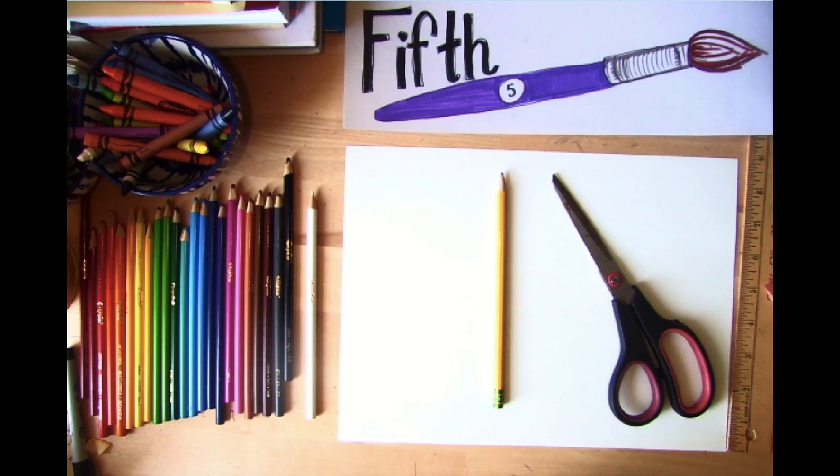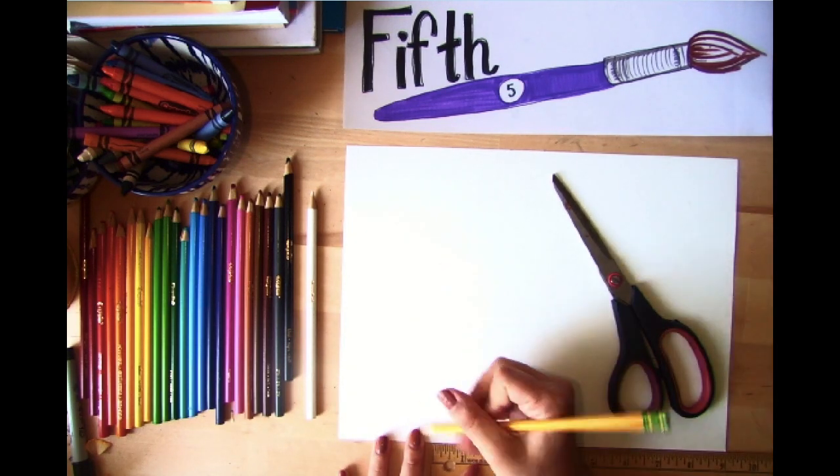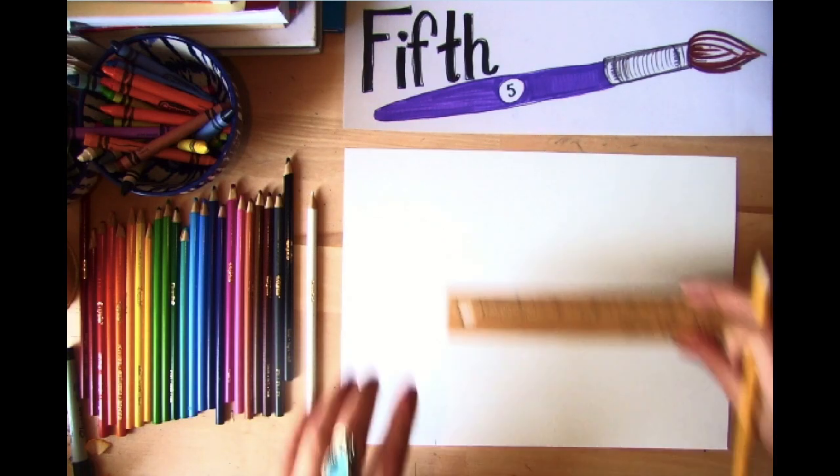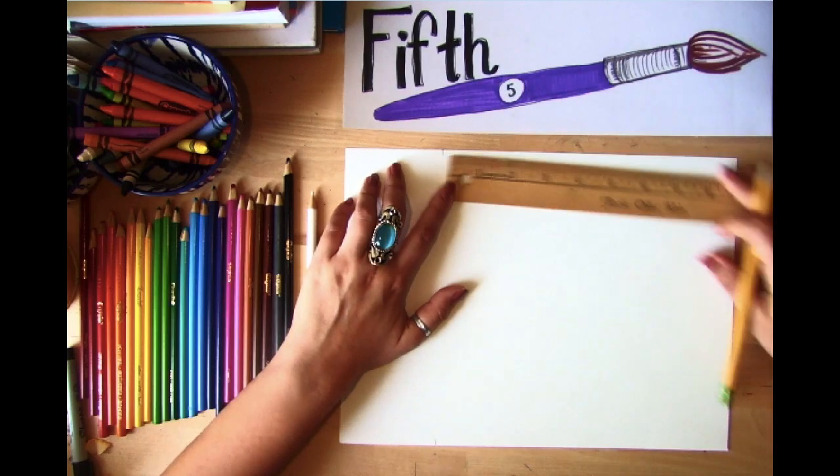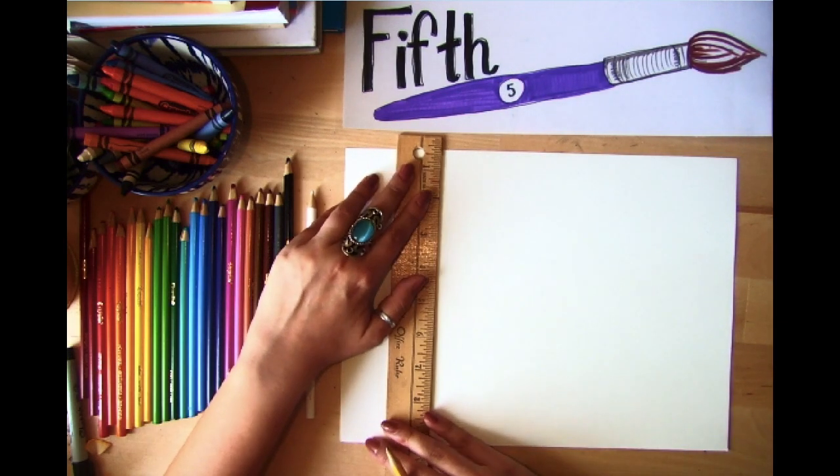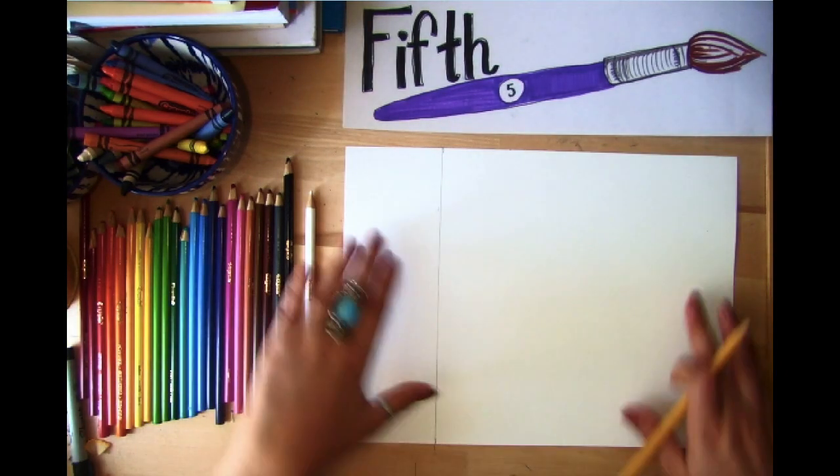So since mine is nine inches and your computer paper will probably be eight and a half, I'm going to find nine inches on this side. I'm going to do the same thing on the top. Then I'm going to draw a line across. Now I know where to cut. So pretty simple.